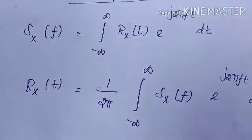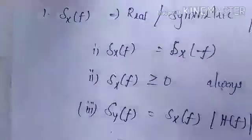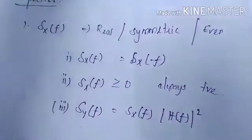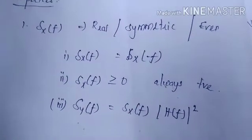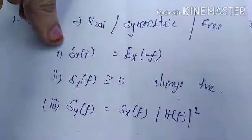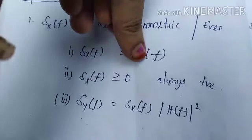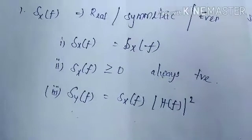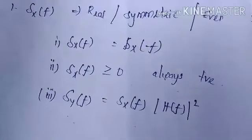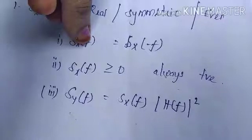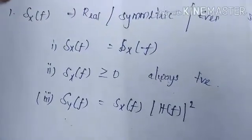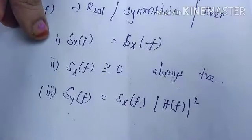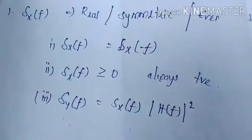Now we will see the properties of power spectral density. Power spectral density Sxx(f) is a real, symmetric, and even function. Being an even function means Sxx(f) is equal to Sxx(−f). They may ask MCQs from this kind of property. Additionally, power spectral density is always positive — that is, Sxx(f) is greater than or equal to zero.